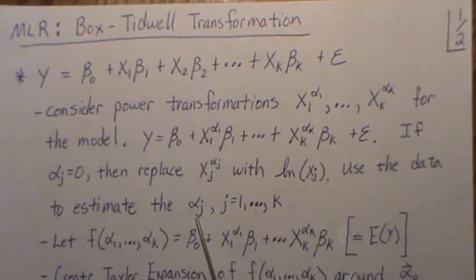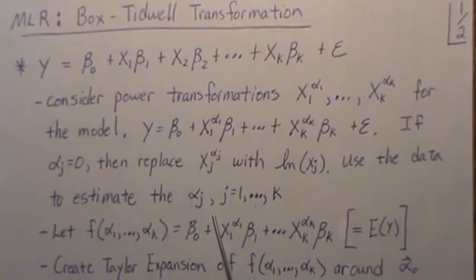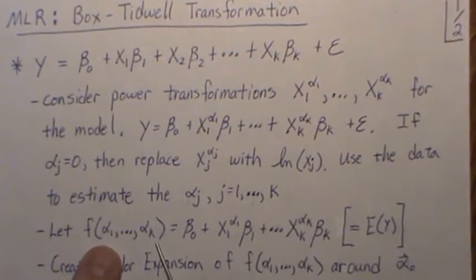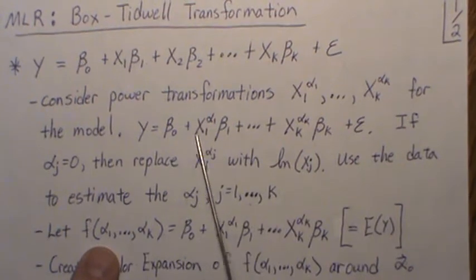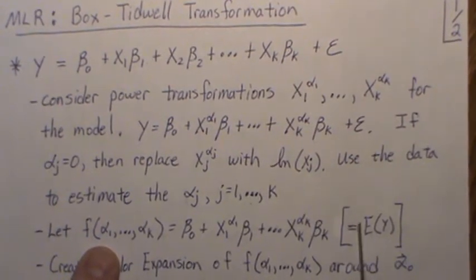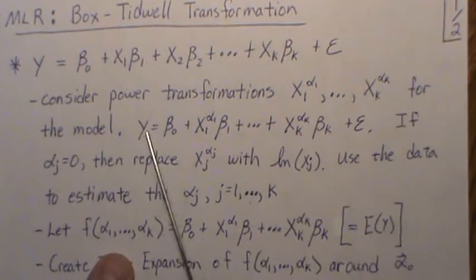So here is what they do. They take, they create a function which is actually the model. It's this value, not the epsilon, so essentially it's the expected value of y, right? Because we assume this has a mean of zero. So the expected value of y is this function.